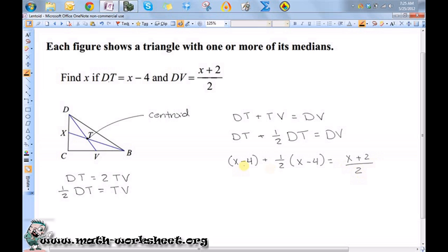Now, since I have an equation with fractions in it, I want to get rid of those fractions, and I'm going to do that by multiplying both sides by the least common denominator of the fractions. So I'm going to multiply both sides by 2. Since they have the same denominator, I just need to multiply by 2. I'm going to distribute this 2. So it'll be 2 times x minus 4. Then distribute it to this. 2 times one-half is just 1. So this is plus x minus 4.